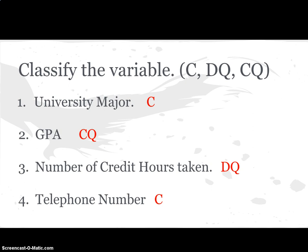So these are two types of variables — categorical and quantitative — and two types of quantitative variables — discrete and continuous. There you go. There is your data. See you later, guys.